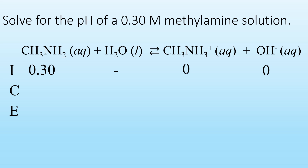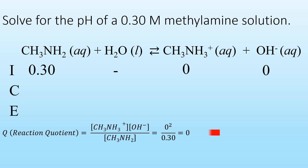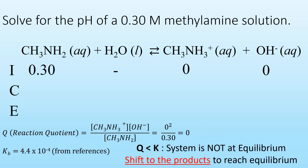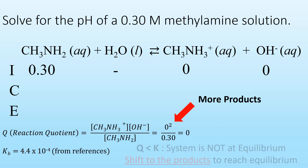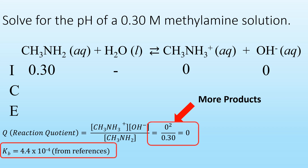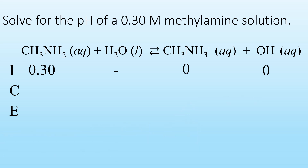Now let's talk about the change. I'll set up the reaction quotient Q from the law of mass action and see that this ratio is equal to zero. The Kb for the reaction of methylamine with water is 4.4 times 10 raised to the minus 4, which is usually found in your references or tables of constants. Since Q is less than K, the system is not at equilibrium. There will be a shift to the products so that more products can be formed, and so that the law of mass action can yield a ratio equal to the equilibrium constant.